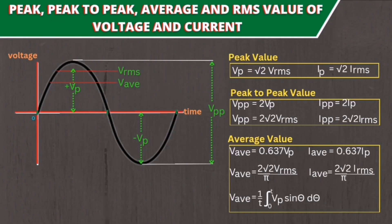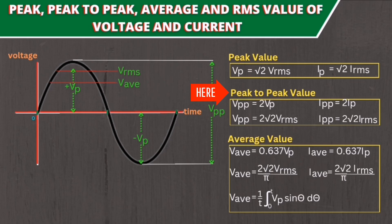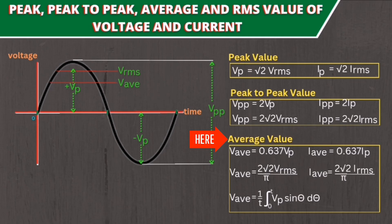As a summary: Peak value equals √2 times V-RMS. Peak-to-peak value equals 2 times V-sub-P, or 2√2 times V-RMS. Average value equals 0.637 times V-sub-P, or (2√2 / π) times V-RMS, or using the integral: (1/T) times the integral of V-sub-P sin(θ) dθ from 0 to T.